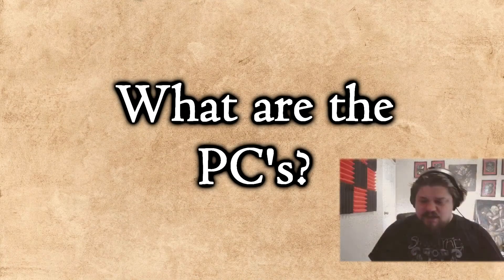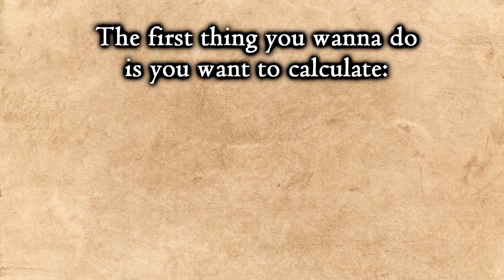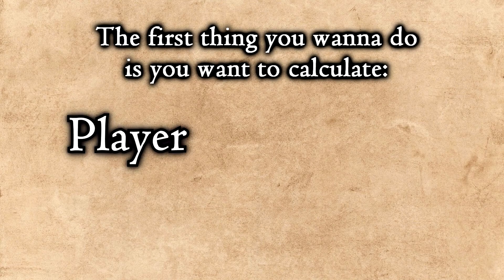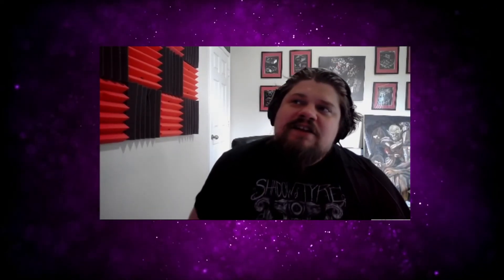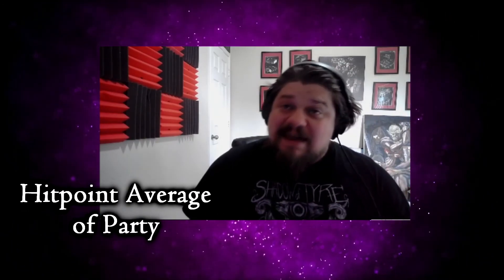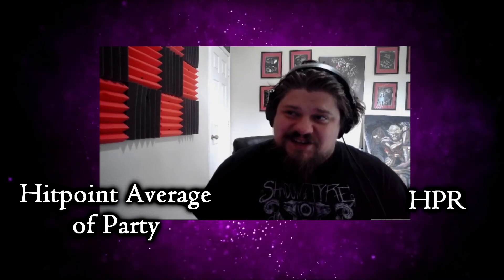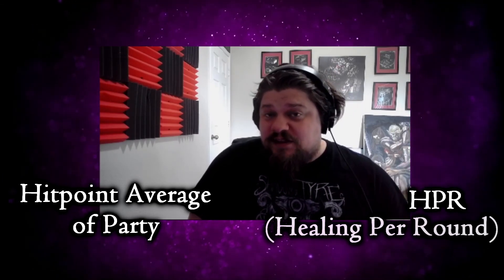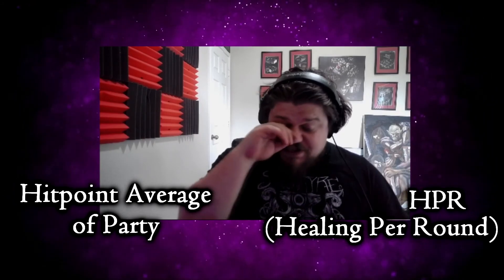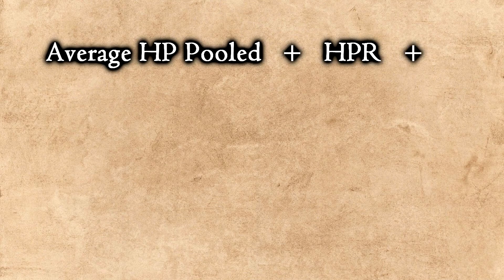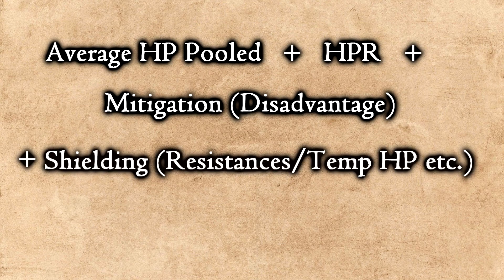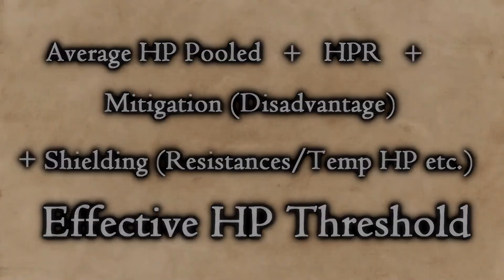The first thing you want to start with is PCs — what are the PCs? The first thing you want to do is calculate player effective HP and its threshold. Player effective HP represents the average amount of hit points that your players are going to have versus what their HPR is. HPR stands for healing per round, and also mitigation effects which can add to prevented damage. You want to calculate average HP pooled, plus HPR, plus mitigation, and then add in shielding — that's your effective HP threshold.